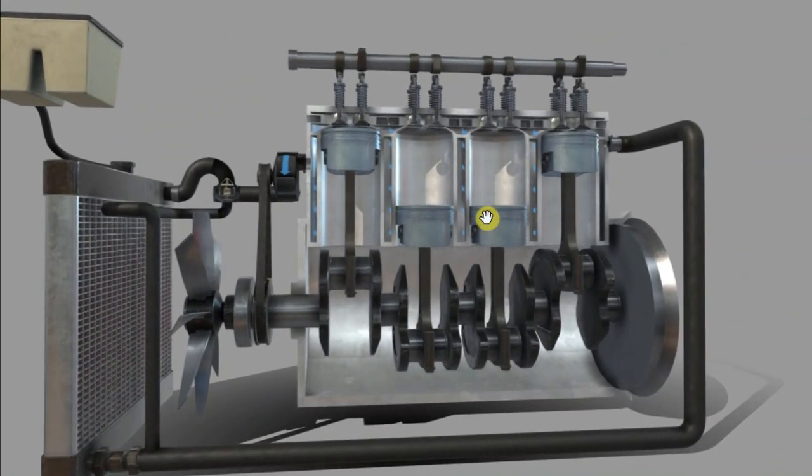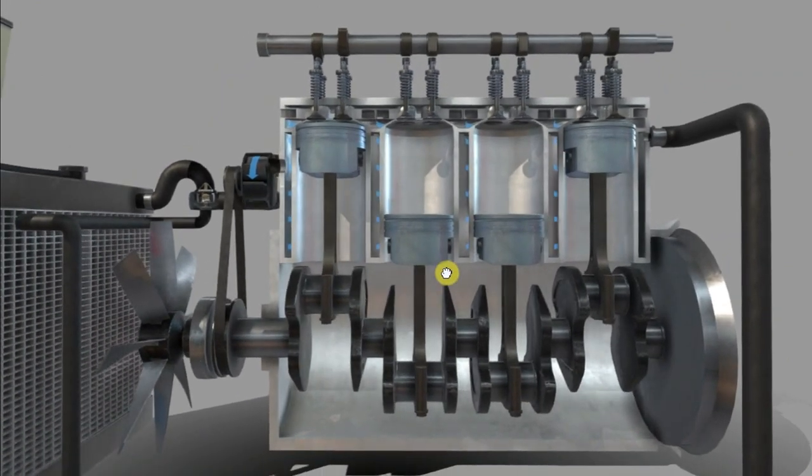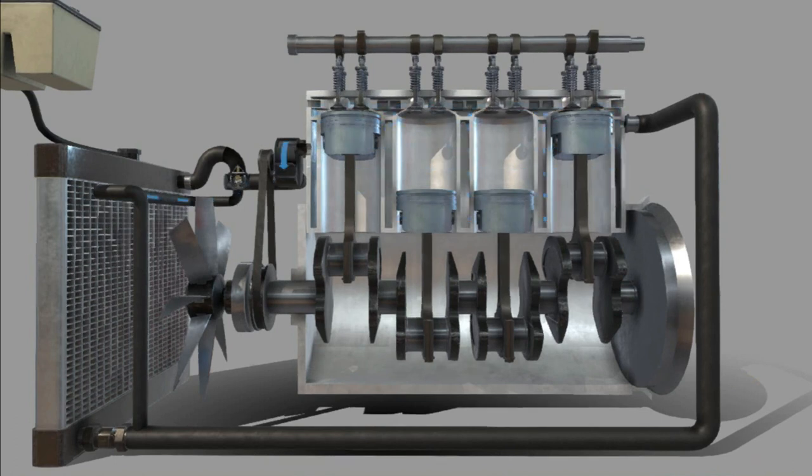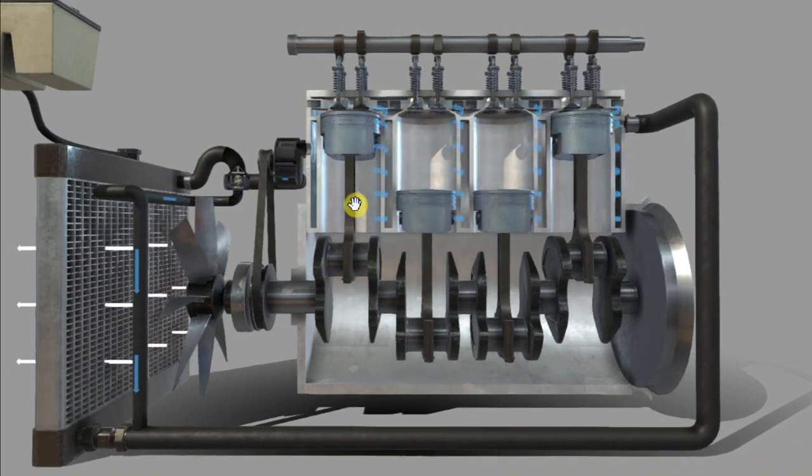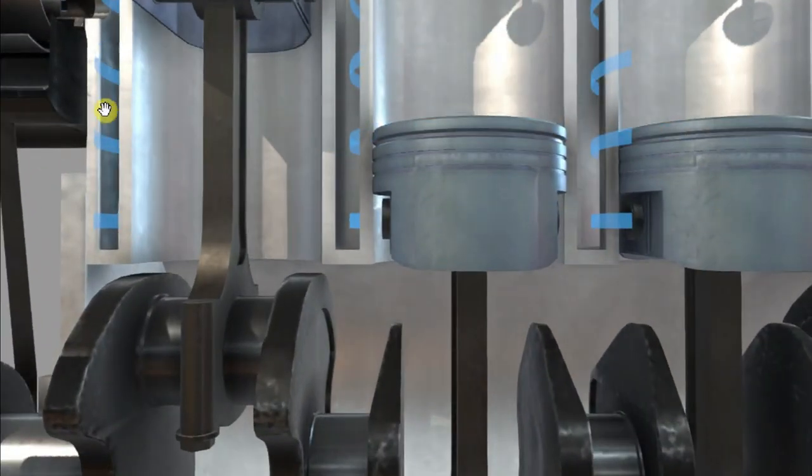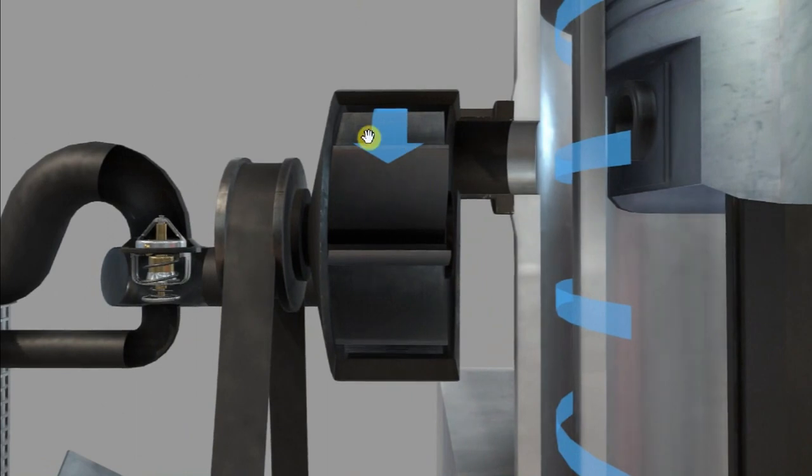So what is happening on this 3D model? If I can angle this correctly and push play, you'll see the blue arrows here - they represent cooling water. And this one over here is actually a cooling water pump. The cooling water pump pumps cooling water around the engine.